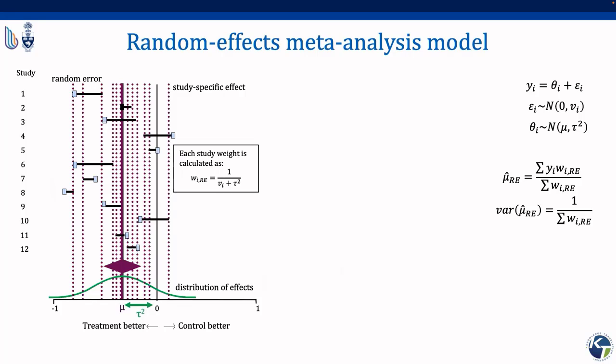Let us start with the random effects model, where the observed effects estimate different true effects, represented by dotted vertical lines which are unobserved. Differences in observed effects are attributed to random error, and differences in true effects constitute heterogeneity. We assume that study-specific true effects come from the same normal distribution with common mean — the summary treatment effect — and variance tau-squared, the heterogeneity. Assuming a normal distribution for outcomes, independent effect sizes, and known variances, the pooled meta-analysis effect is a weighted average with weights equal to the inverse of the effect size variance plus the heterogeneity variance.